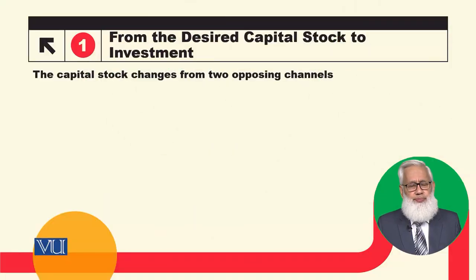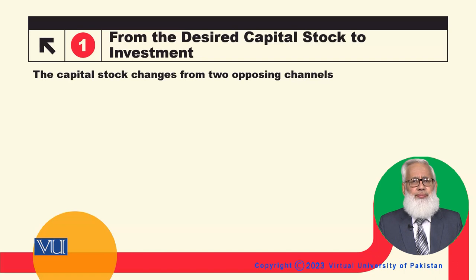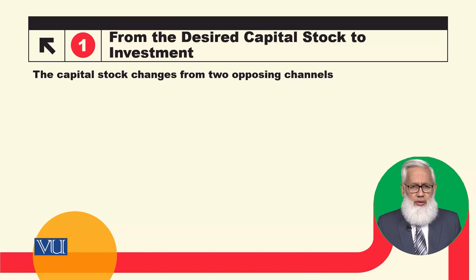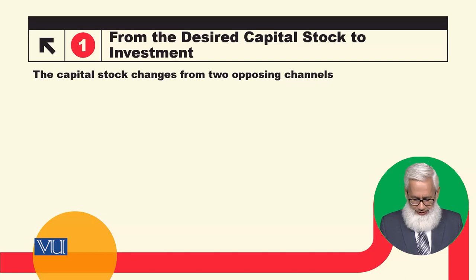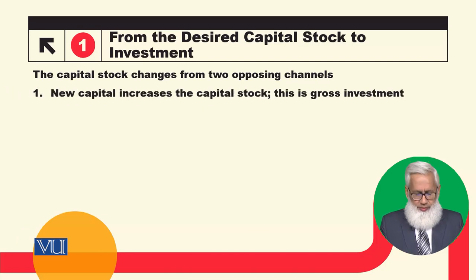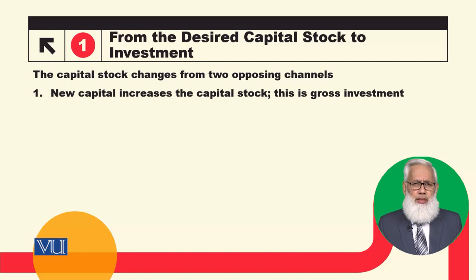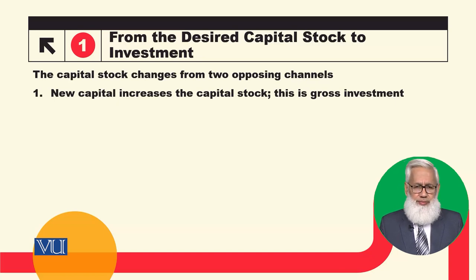Dear students, capital stocks have two types of changes, and these changes come from opposite directions. Number one, any purchase of new capital equipment or goods will increase the existing capital stock. This is called gross investment.